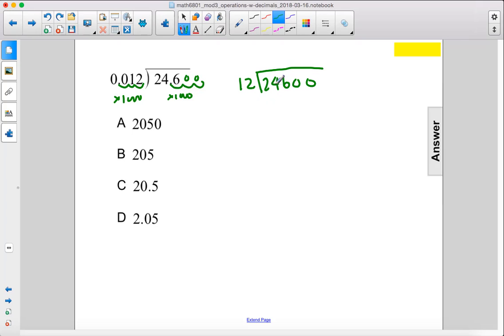So 12 goes into 24, 2 times. 2 times 12 is 24. Subtract, we get 0.